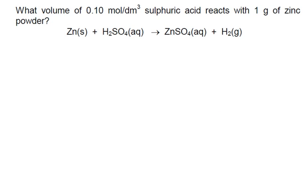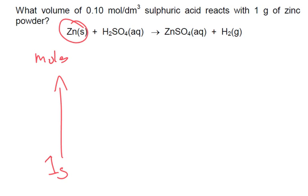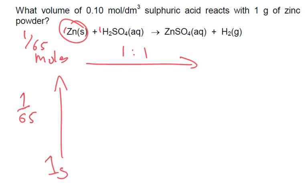Problem 3: What volume of 0.1 moles per decimetre cubed sulfuric acid reacts with 1 gram of zinc powder? It's a slightly different problem — this time we're dealing with a mass to begin with, but we can still convert to moles. Our mass is 1 gram, and the molar mass of zinc is 65. So 1 divided by 65 gives us the number of moles of zinc. The ratio of Zn to H₂SO₄ is 1 to 1, so we know we've got 1/65 moles of sulfuric acid.